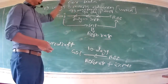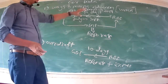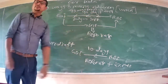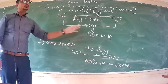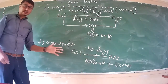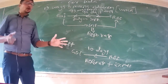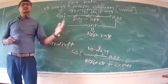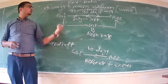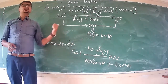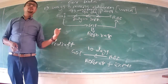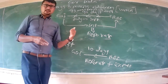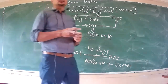So when the government borrows from RBI via WMA and the entire amount is exhausted and the government needs more funds, what options are available to the government? We will discuss that in the next class. Thank you.